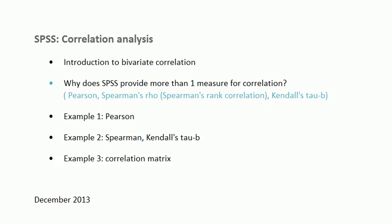Hi everyone. In this video I'm going to show you how to do correlation analysis in SPSS. What you're going to find in SPSS is that it provides you with more than one choice of correlation, so there is a question about which one to use and when. I'm going to move on to some examples: an example where you use Pearson correlation, an example where we use Spearman or Kendall's tau b, and I'm going to wrap up by looking at a correlation matrix.